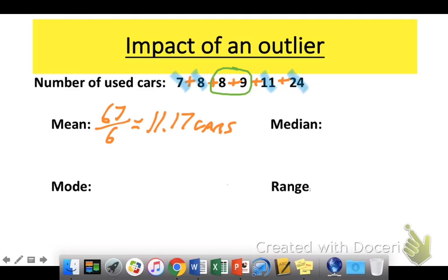So how do I find the median? Well, to find the median, what I would do is I would take the two numbers in the middle, add them together, and divide by 2. And this tells us that the median number of cars is 8.5. So the 24 didn't have a huge impact on the median, but it really did on the mean.